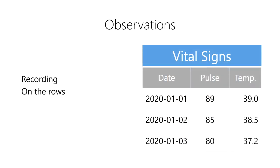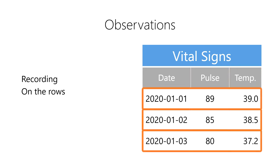For example, imagine that we are recording the vital signs of a patient at a hospital. For each observation, we would record the date of the observation, the patient's heart rate, their temperature, and other vitals. Each of these observations would be recorded on a separate row.